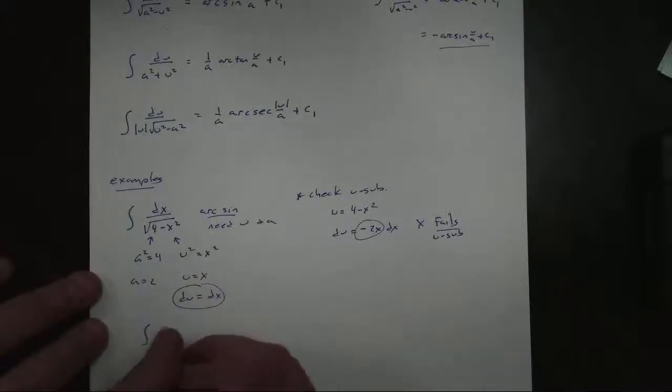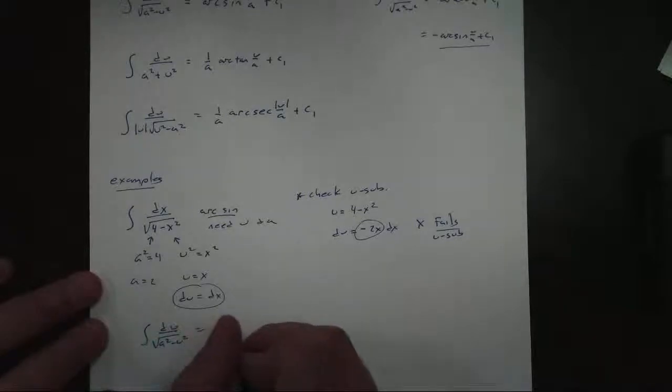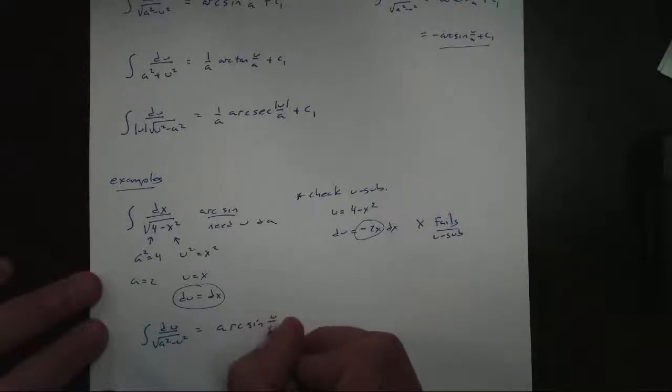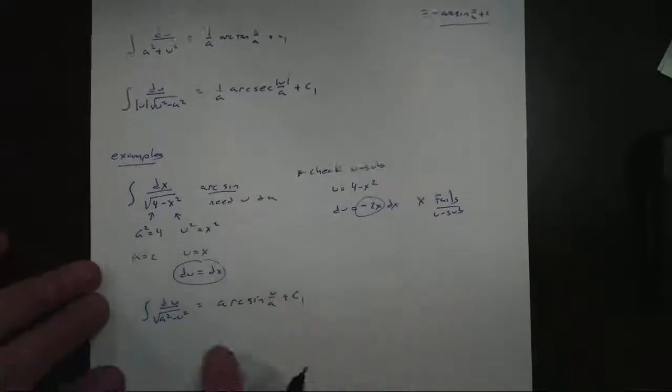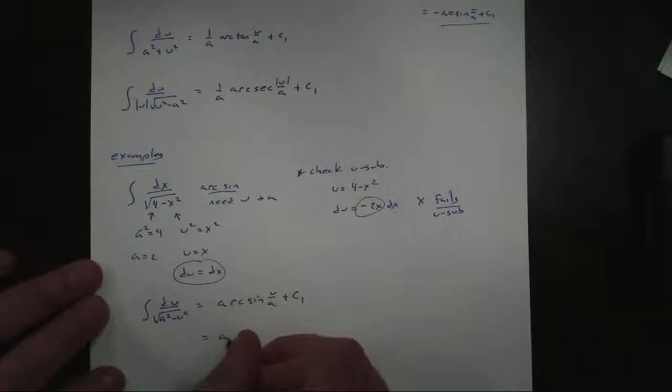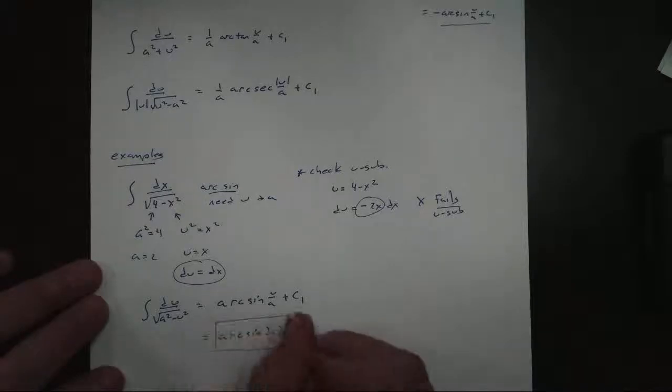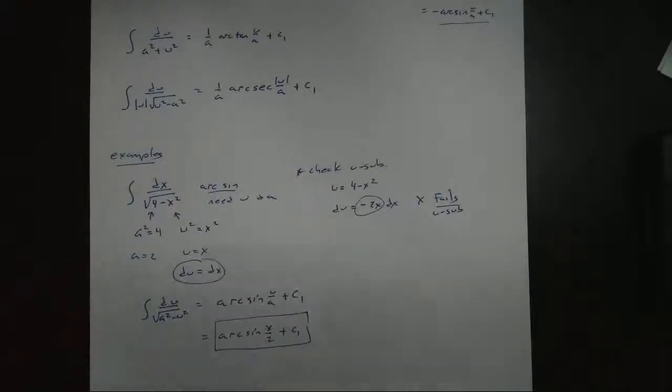So we're going to get du over the square root of a squared minus u squared. And we know the rule here from above is arc sine of u over a plus c. Now, this will be the only time we write it out completely like this. And if I replace my u and a, arc sine, u is x, a was 2, we get plus c. And there's our antiderivative.